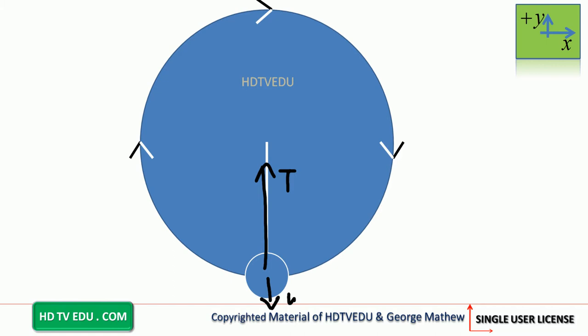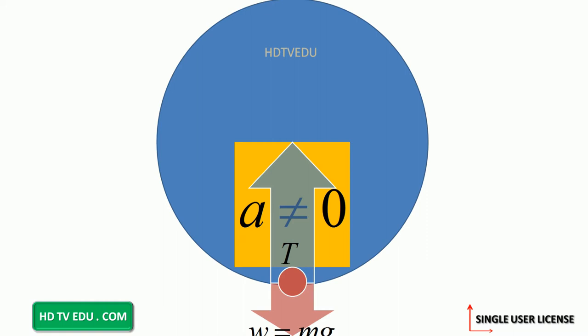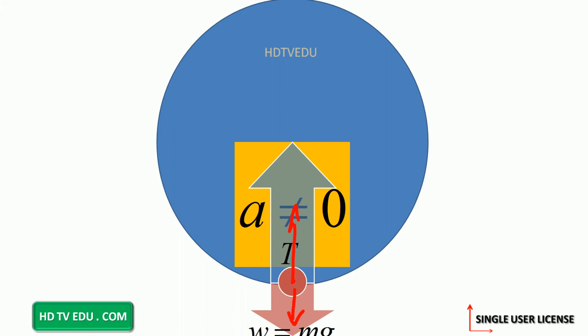So you have tension towards the center, gravitational force away from the center, and net force towards the center. Tension minus W equals ma. And whenever an object moves in a circle, acceleration is the square of the speed divided by the radius. So tension minus weight equals m times v² over r. To summarize: acceleration is towards the center, meaning the bigger force acts towards the center. Tension acts towards the center; gravitational force acts away from the center. By common sense, the net force is the bigger force minus the smaller force.